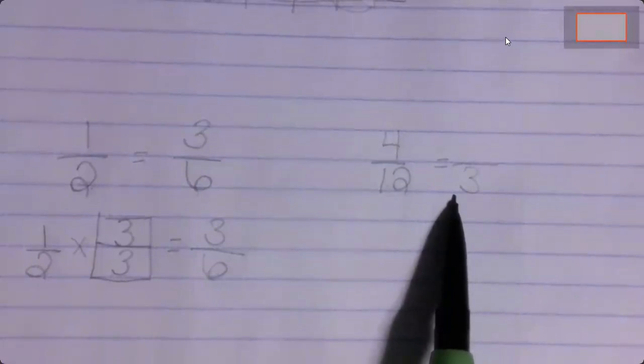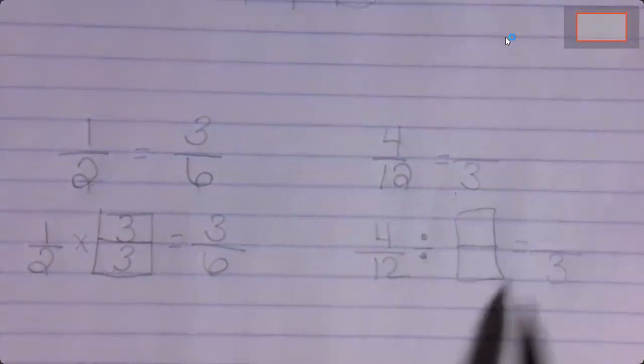So which operation — multiplication or division — will cause our number to decrease? Division will. So I'm going to start with my first fraction, four-twelfths. We said that we were dividing, and then we're going to divide by a fraction that equals one, and the equivalent fraction is going to be something-thirds. I ask myself: twelve divided by what will give me three? Four.